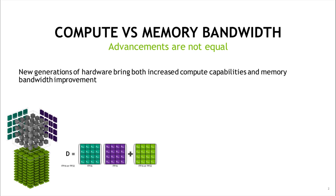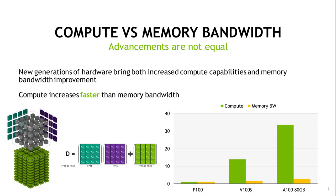With new generations of hardware we get advancements in both the compute capabilities of the chips as well as the memory bandwidth. When we think about compute capability improvements, we think of, for example, the introduction of Tensor Cores that you can see on the screen. Similarly, memory bandwidth increased with the change from GDDR memory, then to HBM and then to HBM2 in recent architectures. However, compute capabilities increased much faster than memory bandwidth. On the chart here, we see three GPU architectures — Pascal, Volta, and Ampere — and as you can see, compute capabilities from Pascal to Ampere rose over 30 times, whereas memory bandwidth rose only a few times.